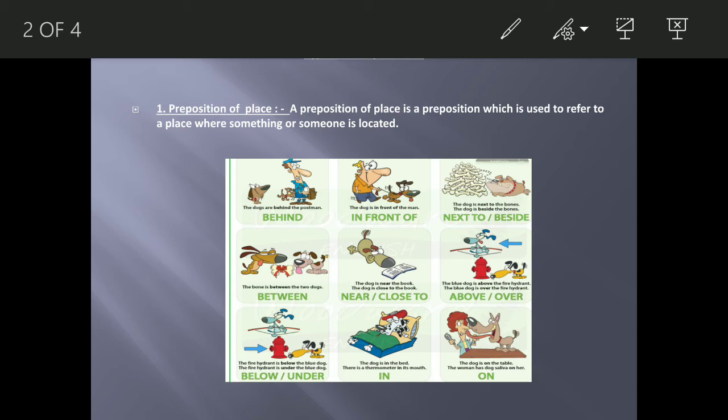The blue dog is above the fire hydrant. The blue dog is over the fire hydrant. The fire hydrant is below the blue dog. The fire hydrant is under the blue dog. The dog is in the bed. There is a thermometer in its mouth. The dog is on the table. The woman has dog saliva on her.